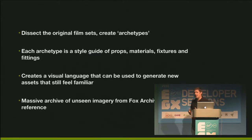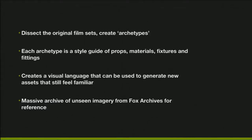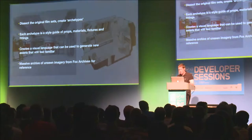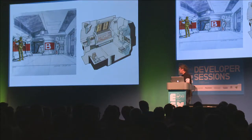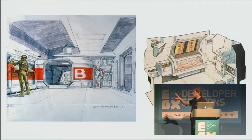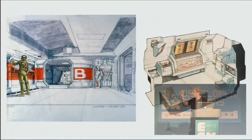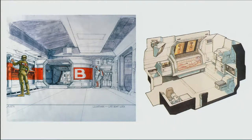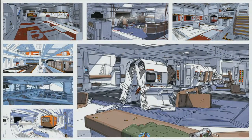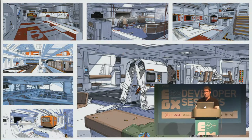Luckily, we were given a massive archive - three terabytes worth of stuff from Fox, imagery and behind-the-scenes material that was complete gold dust, really helping us understand how things were done back then. The first thing we'd do would be to take the concepts done by the likes of Ron Cobb - his work was done in a very specific, very architectural style, line art rather than big painted dioramas. We would produce our concept art in the same way, trying to think the way they would think and use the same tools and methods. So this is an idea of a habitation archetype, the kind of living spaces and how we would take what was in the film and stretch it out.